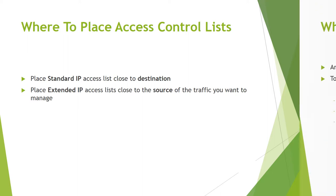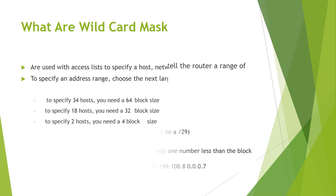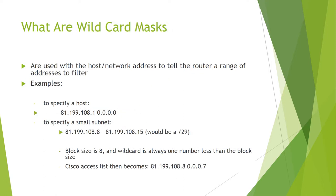Wildcard card masks are used with access lists to specify a host, network, or part of a network. To specify an address range, choose the next largest block size. For example, to specify 34 hosts you need a 64 block size, to specify 18 hosts you need a 32 block size, and to specify two hosts you need a 4 block size. These are used with the host network address to tell the router a range of addresses to filter.